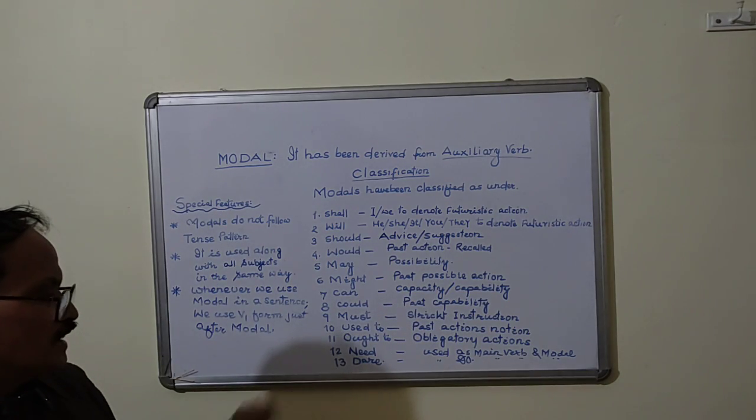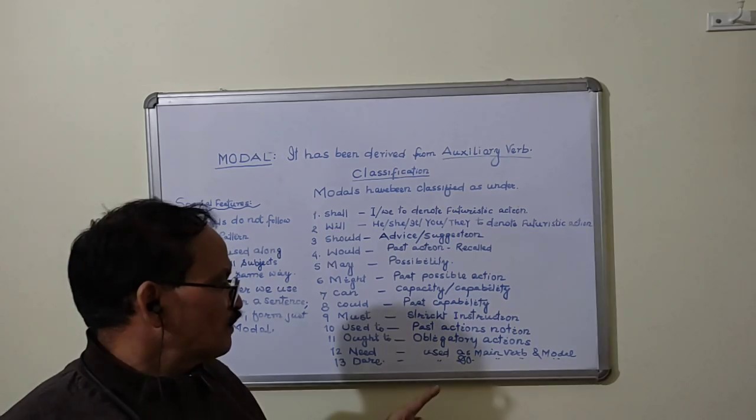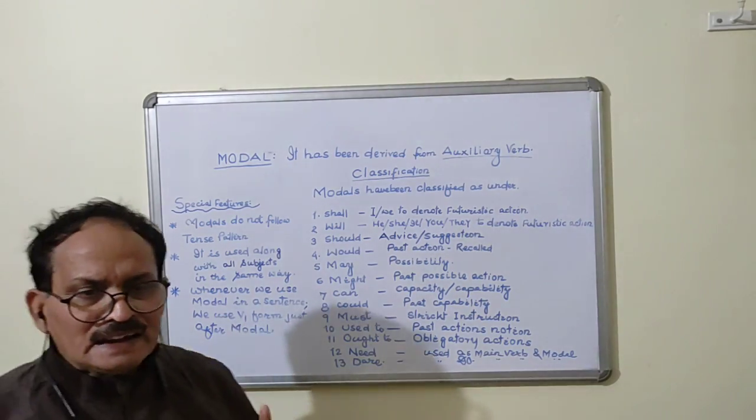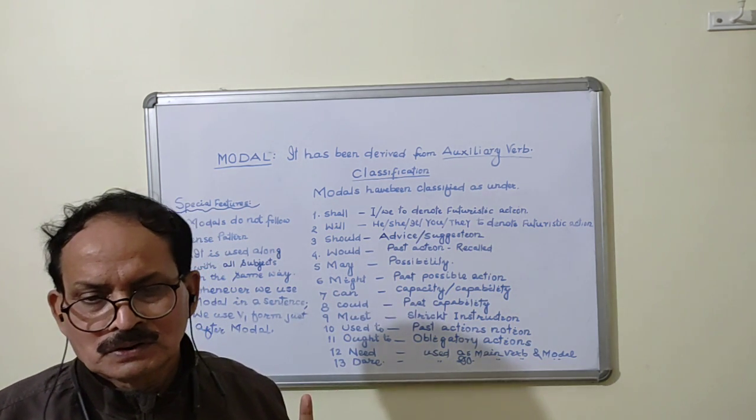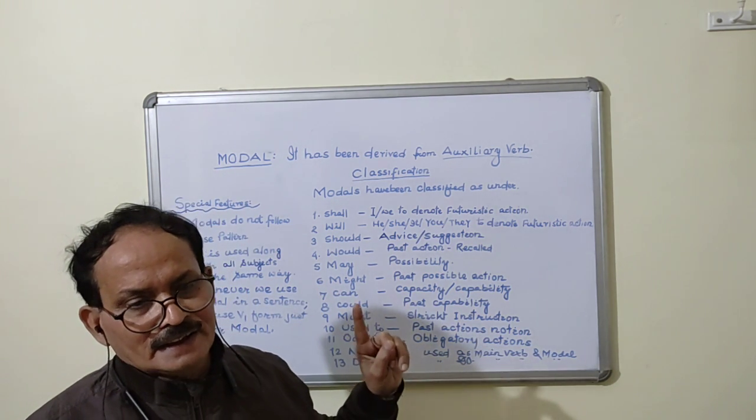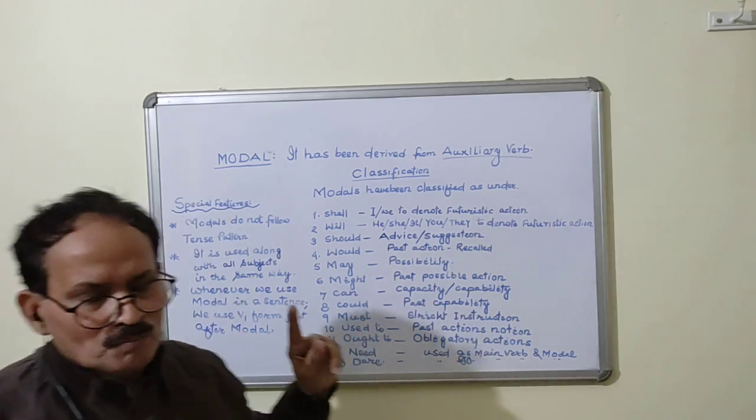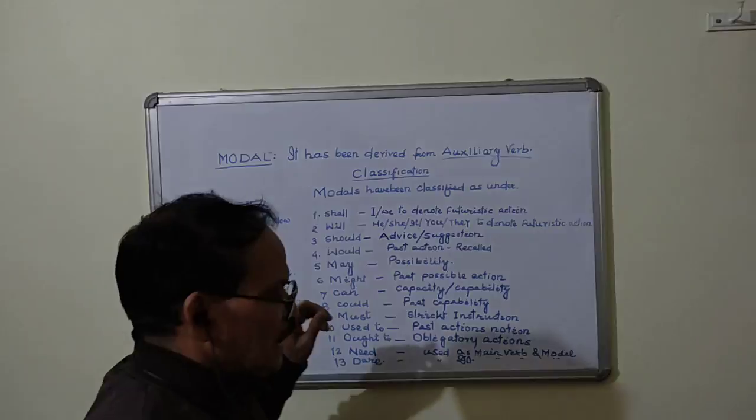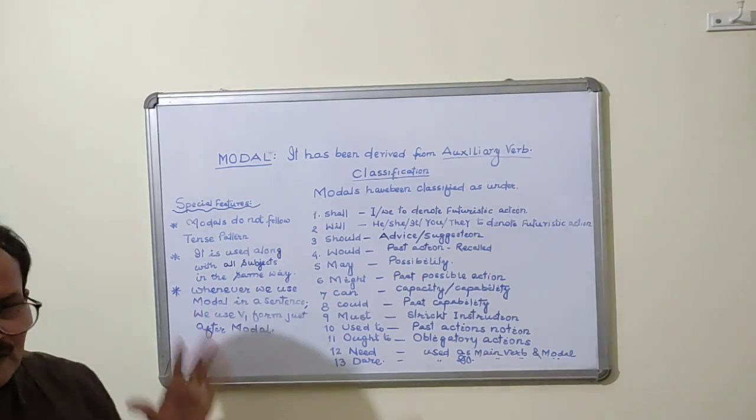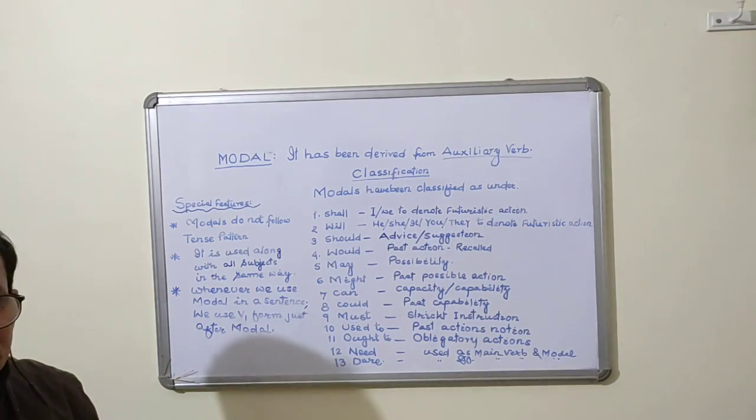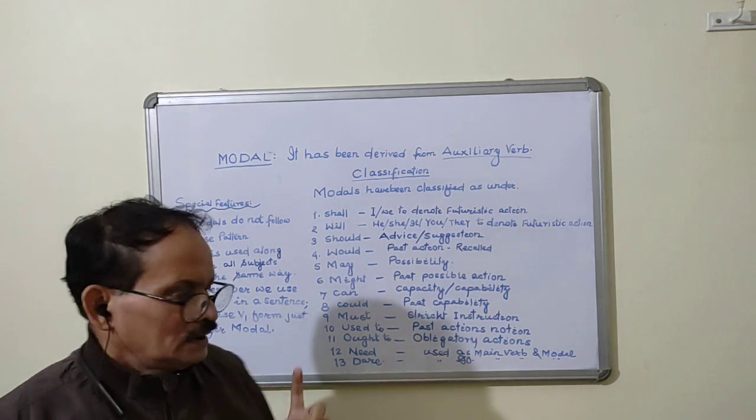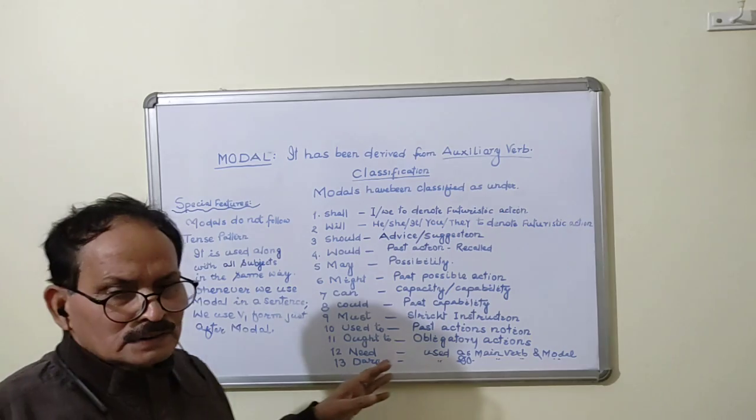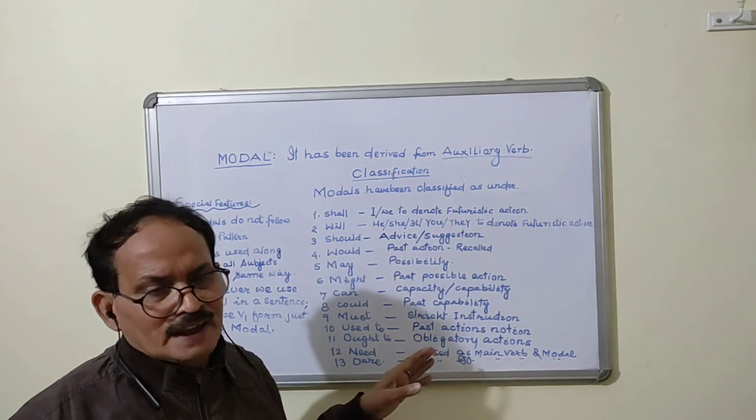Need and dare are used as main verb as well as model. For example, he need not go there. It is used as model. But if I say he is in need to have money, he needs rupees hundred. Need is verb and need has been used here as verb.